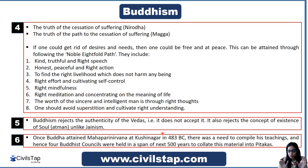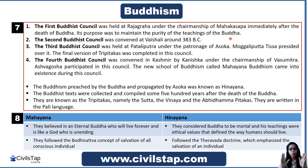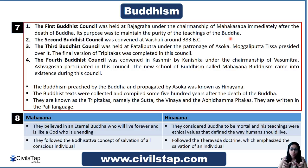After Buddha attained Mahaparinirvana in 483 BC, his teachings needed to be compiled. This is why four Buddhist councils were organized over the span of the next 500 years. The First Buddhist Council was held at Rajagriha, with Mahakassapa as chairman. Its purpose was to maintain the purity of Buddha's teachings, because after his death many people were adding their own interpretations. The location and chairman of each council are very important to remember for UPSC questions.